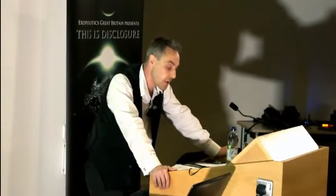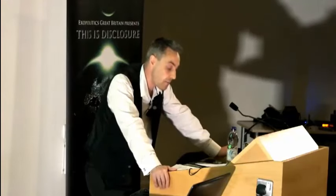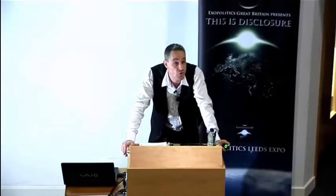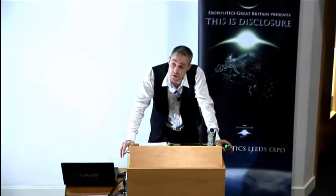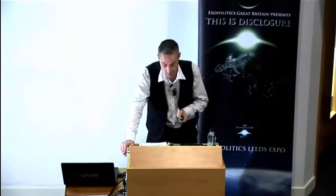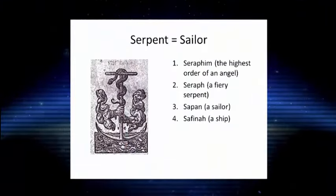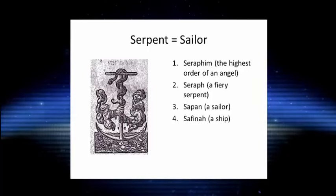These strange entities were represented as dragons or seraphs, but are also compatible with what we would describe with the Hebrew term for an angel. There is a crossover between the dragon — a type of watcher or sentinel — and the understanding that this dragon is a type of deity. When we look at the symbolism of the seraphim, we get the word seraph for a fiery serpent from serapha, which is fire, but etymologically it's related to sapon — a sailor — and saphena — a ship.